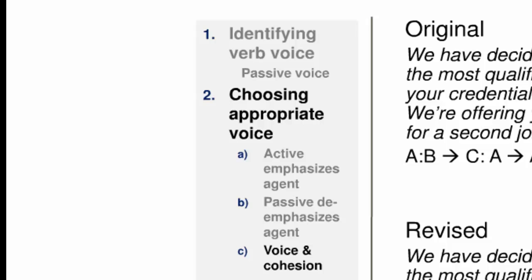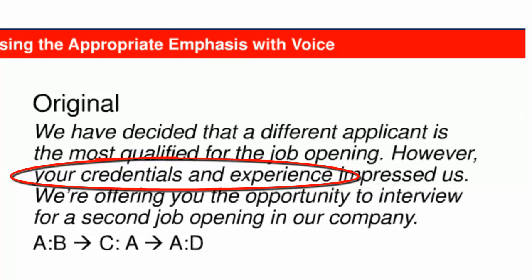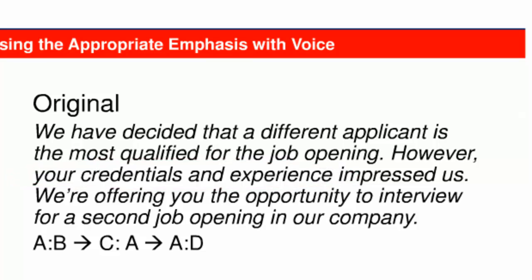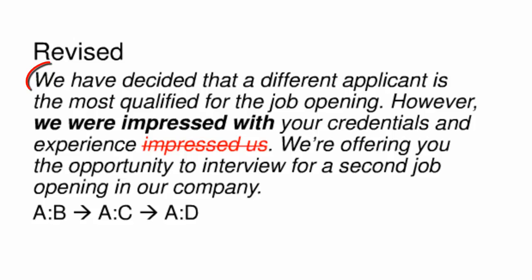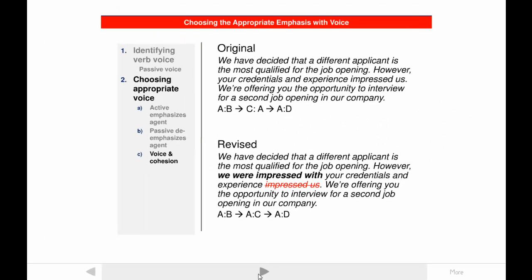There's one more thing to consider about choosing between active and passive voice: cohesion. In the original passage shown here, information is not arranged cohesively. Because active voice was chosen to emphasize the reader — a positive message about your credentials — it creates a non-cohesive pattern. In the revised passage, WE is repeated in the subject slot of all three sentences, creating a cohesive pattern. However, the first and third sentences are active voice, whereas the second is passive voice. In this case, the best overall choice is to maintain the passive voice in the second sentence in order to preserve cohesion. For more on that topic, see the tutorial devoted to it.